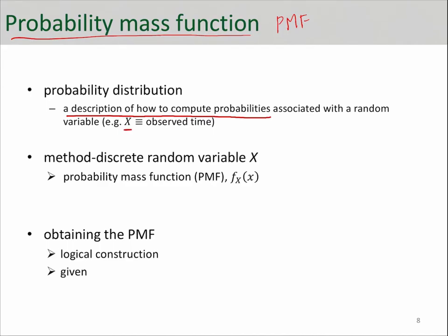If your random variable, for example, is X, and X is the observed time between two customer arrivals, and you want to calculate some probability associated with that—let's say, what is the probability that this time between two arrivals is less than five minutes—the PMF function helps you with that.